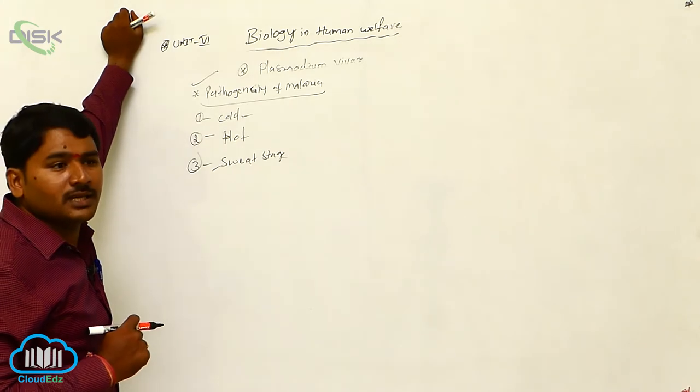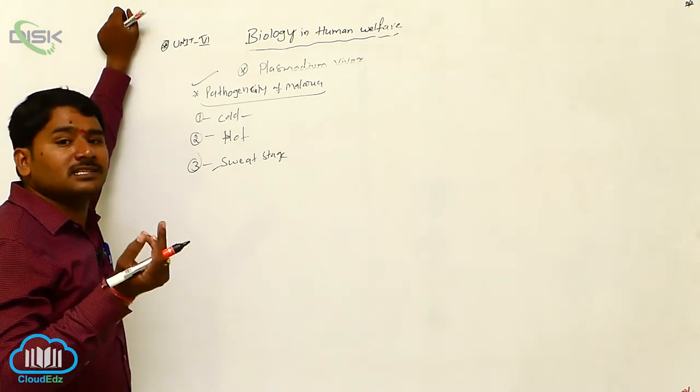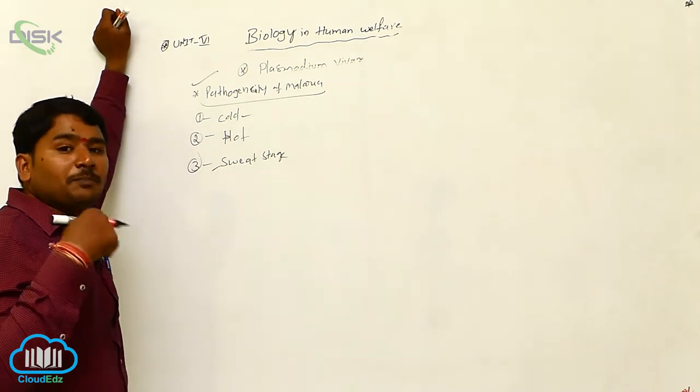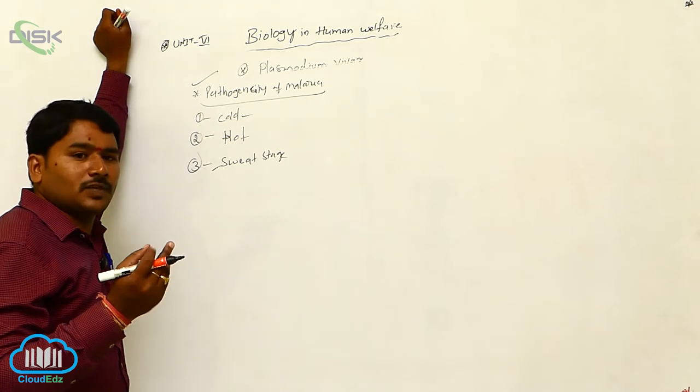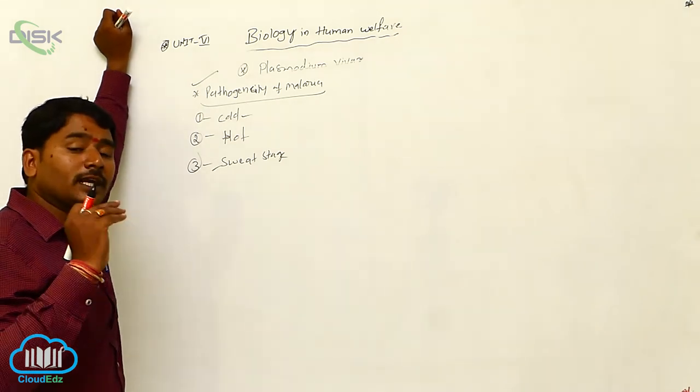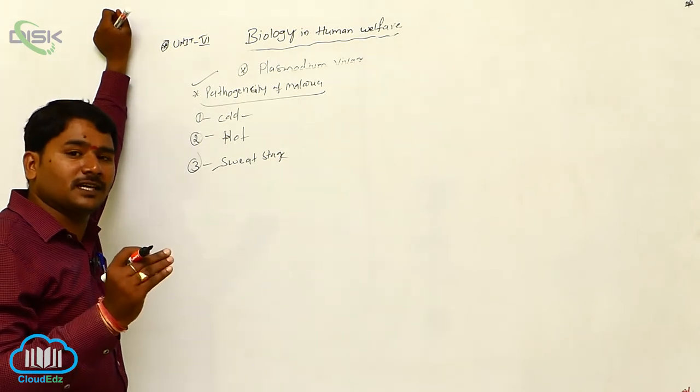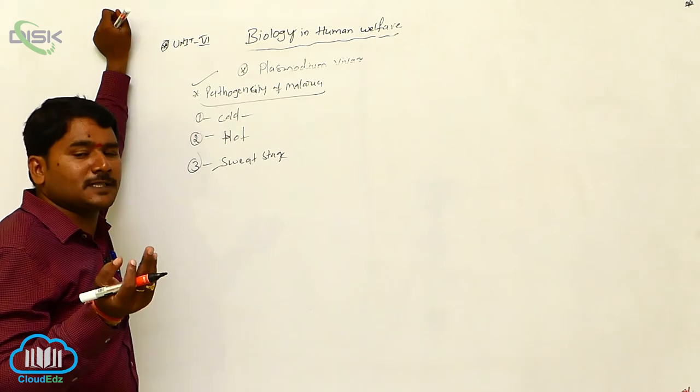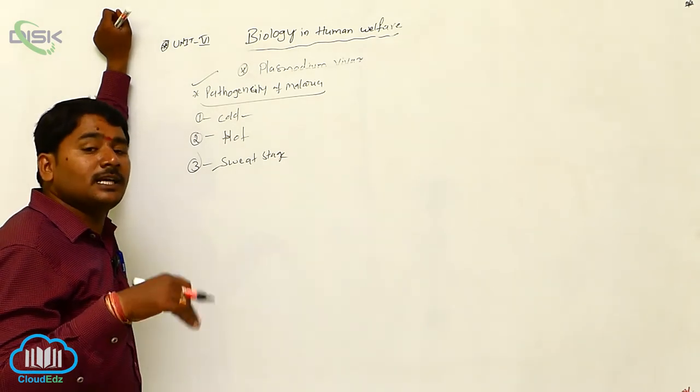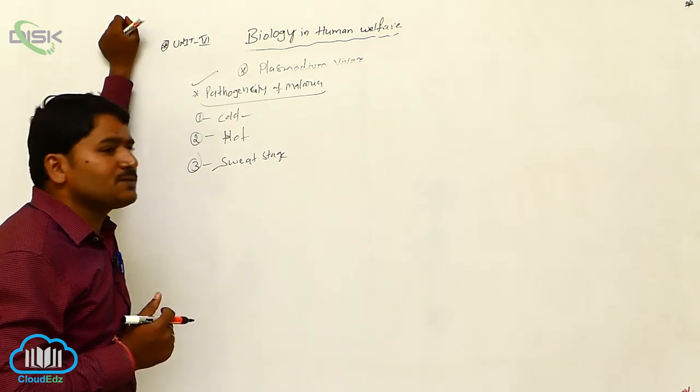Next, the heat stage. In the heat stage, the body temperature will be enhanced, increased, and increased pulse rate, increased breathing, increased body temperature. Body temperature may reach 104 to 106 degree centigrade. Heart rate also increased, pulse rate also increased, breathing rate also increased in the heat stage.